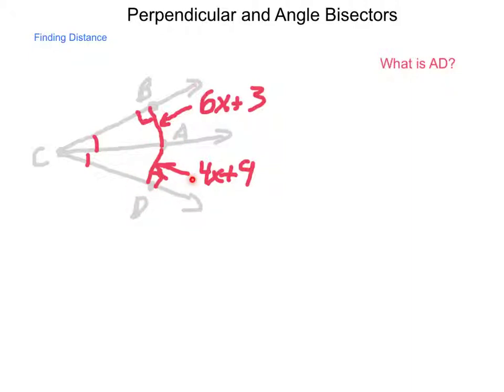So, the way we do this is we employ the angle bisector theorems and we simply say that 6x plus 3 is going to equal 4x plus 9, because those have to be equidistant, the line segments are congruent. Now, solving for x, I subtract 4x from each side, so I have 2x plus 3 is equal to 9. Subtraction property of equality, I can subtract 3, giving me 2x is equal to 6. Division property of equality says I can divide both sides by 2 and have x equals 3.